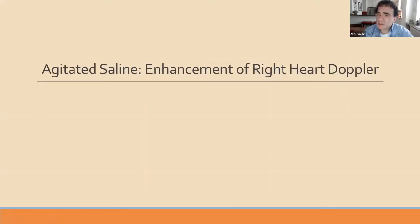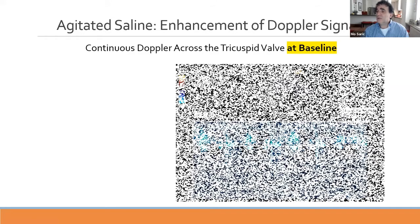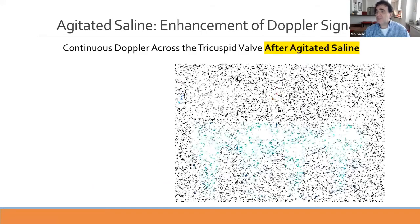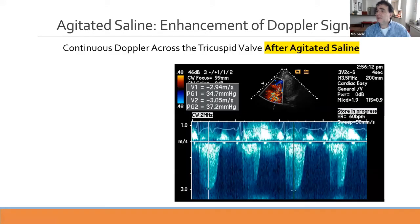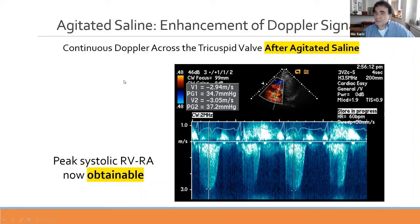Agitated saline can also enhance right-heart Doppler signals. At baseline before contrast, the tricuspid regurgitation jet signal is barely obtainable. After agitated saline injection, the contrast clearly visualizes the TR jet, and now we can confirm the gradient is about 35 mmHg between the right ventricle and right atrium across the tricuspid valve.